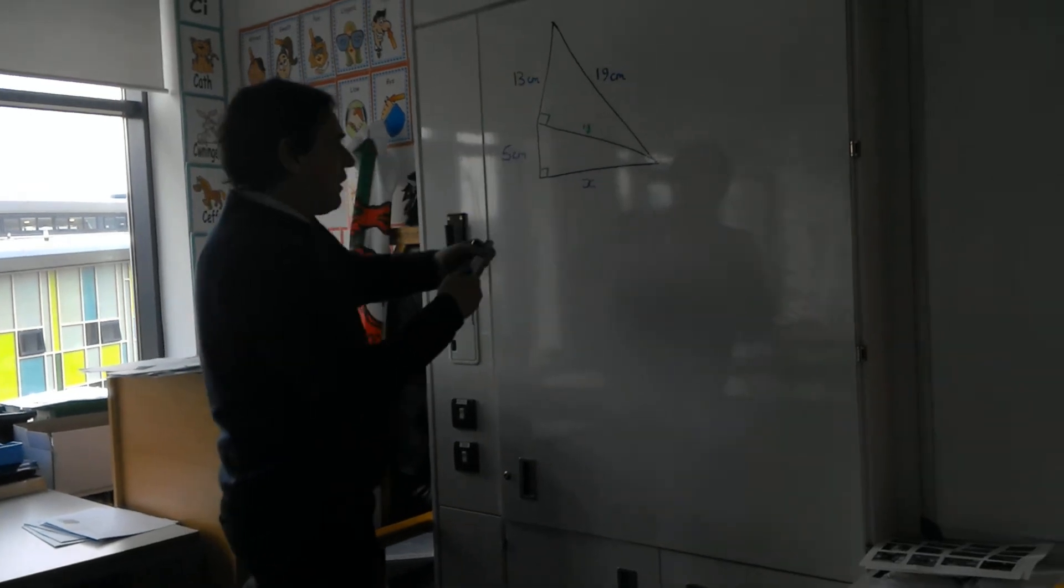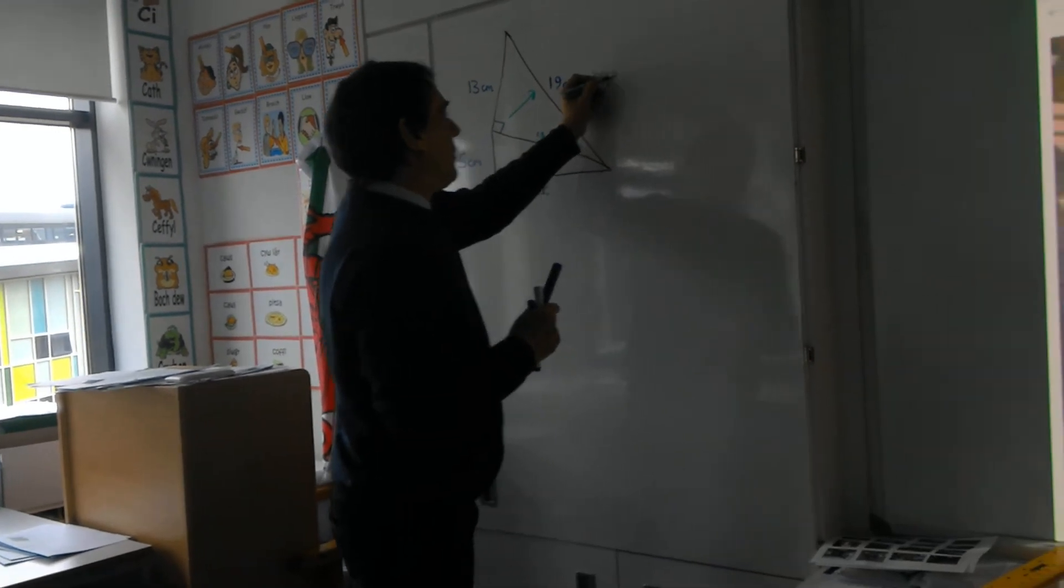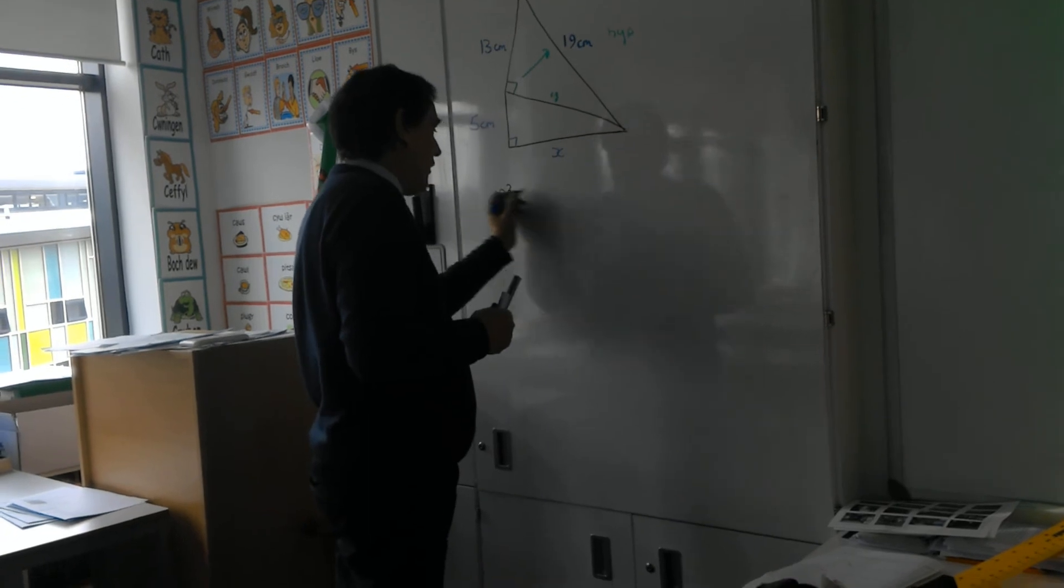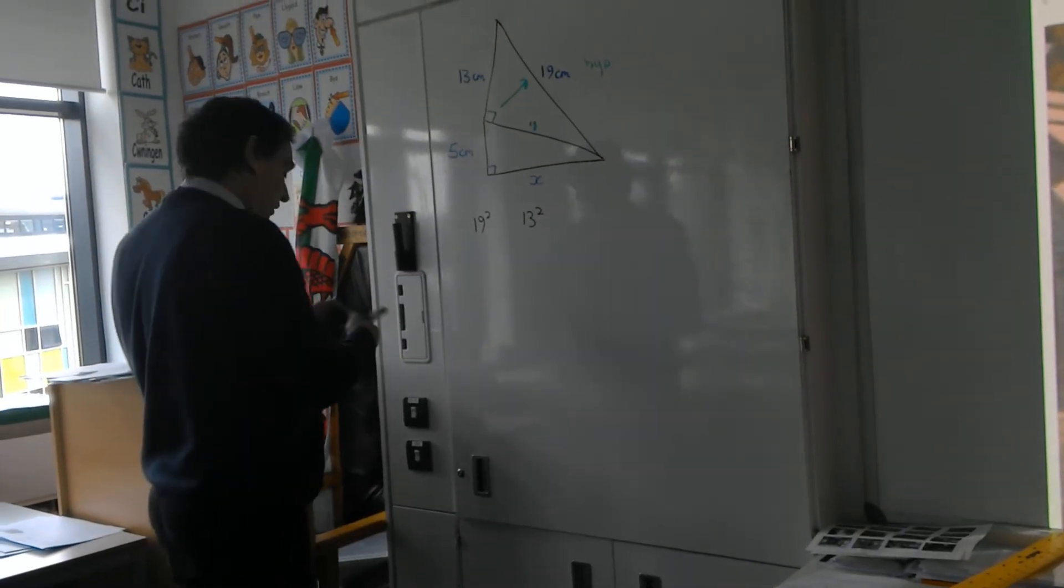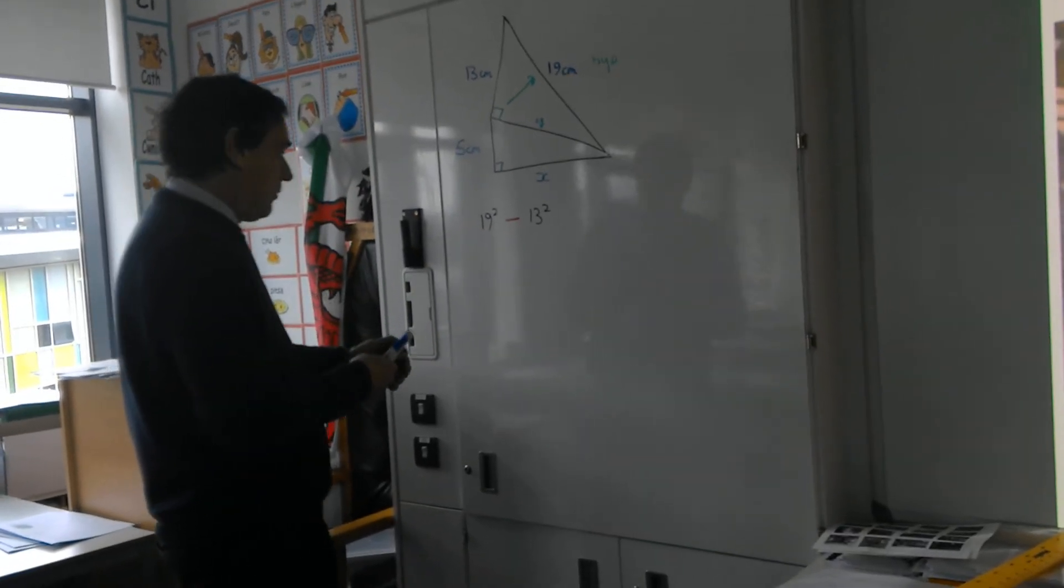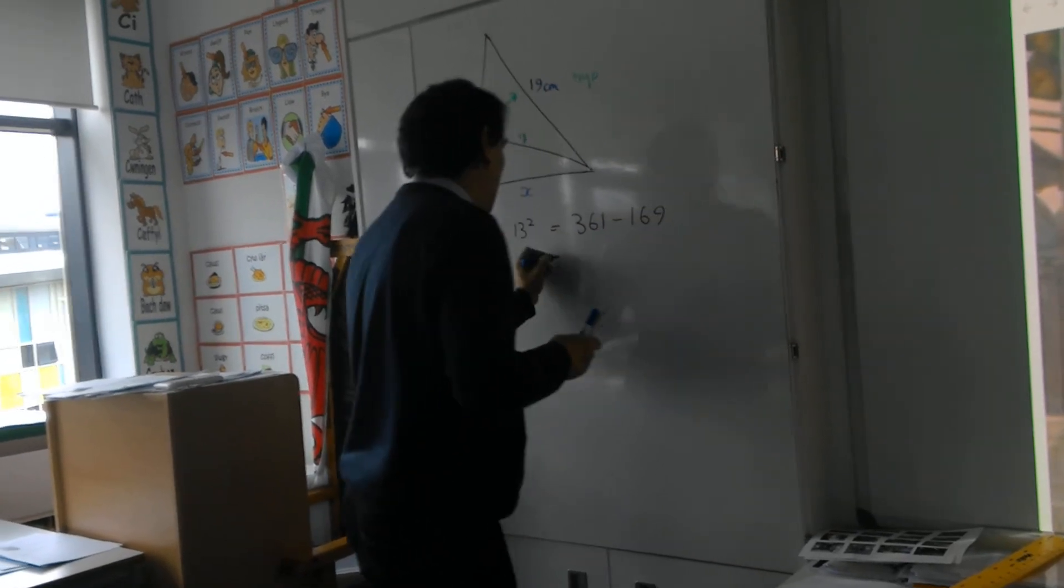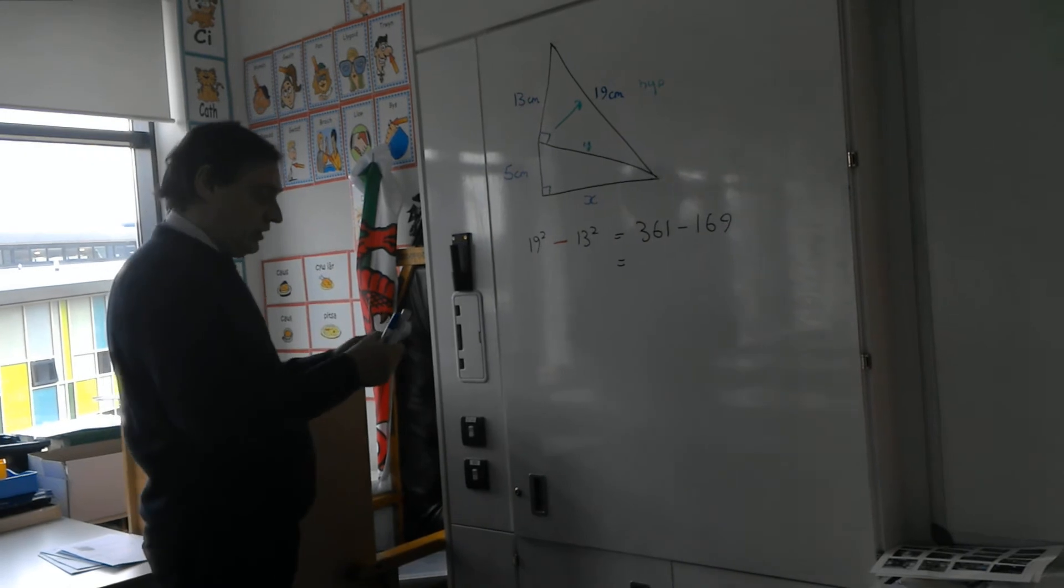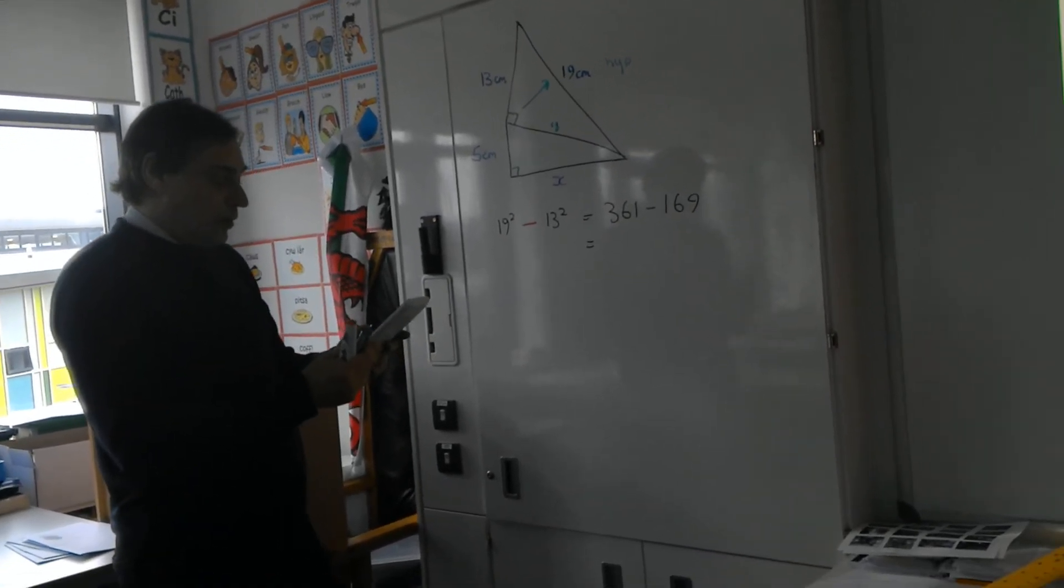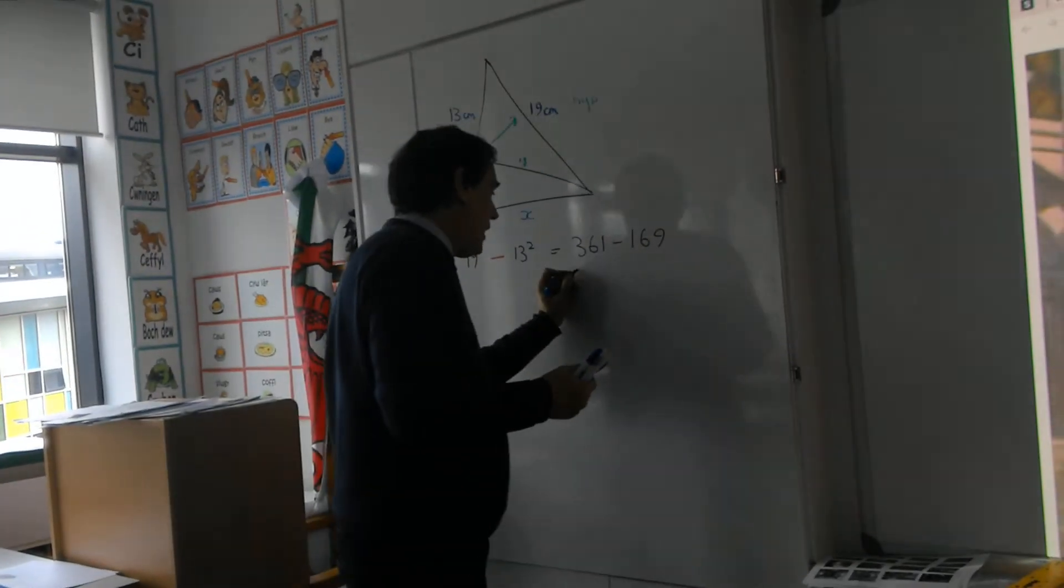So can you see that the 19 is my hypotenuse? So I'll write this right hype here. So I'm going to be using my takeaway method. So 19 squared and 13 squared. So I'm going to take away here. 19 squared take 13 squared. That's going to be 361 take away 169. I'll put that into the calculator because we'll have to square root it in a minute. I've got 361, that's my 19 squared, take away 169, which is my 13 squared. That gives me 192.